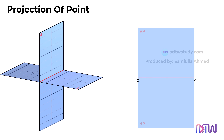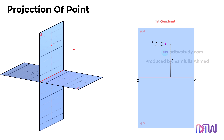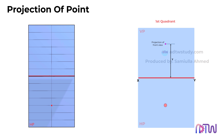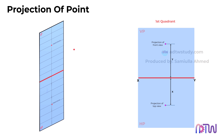Consider a scenario where a point lies in the first quadrant — that is, in front of VP and above HP. When we view the point from the front, it will be positioned above the xy-line at a distance of y. In the top view, the point will appear on the horizontal plane at a distance of x from the xy-line. Thus, the representation on the 2D plane for the first quadrant follows this configuration.